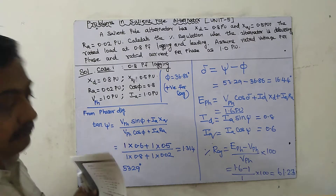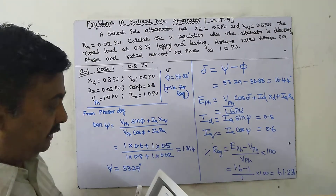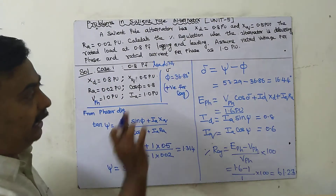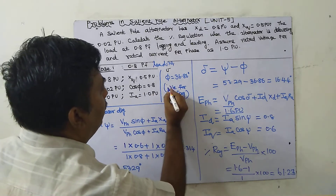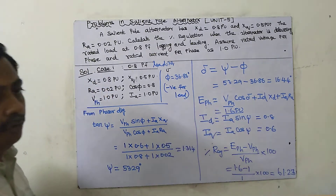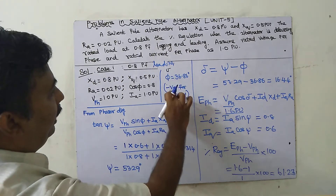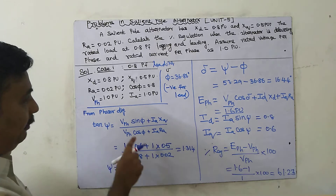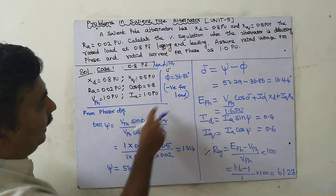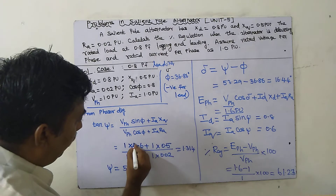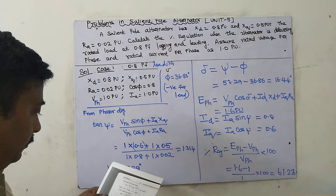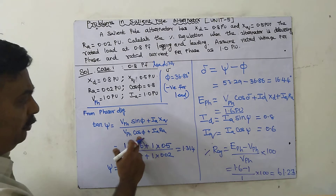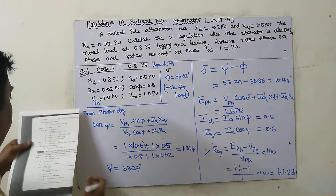Case two: 0.8 power factor leading. The only difference is that phi must be taken as negative for leading power factor. So φ = −36.86°. In the tan ψ formula, sin(−36.86°) = −0.6, giving a negative value in the numerator. The denominator with cos(−θ) = cos θ remains unchanged.